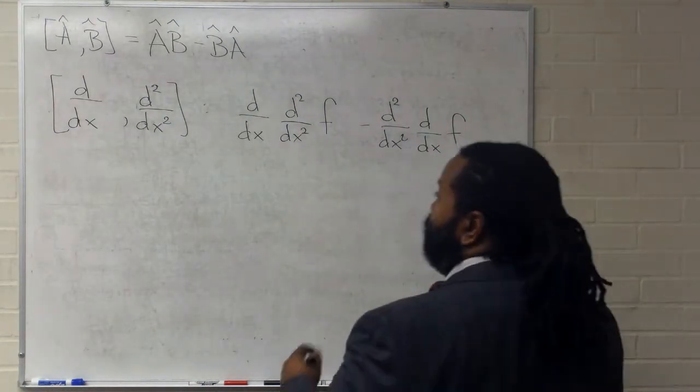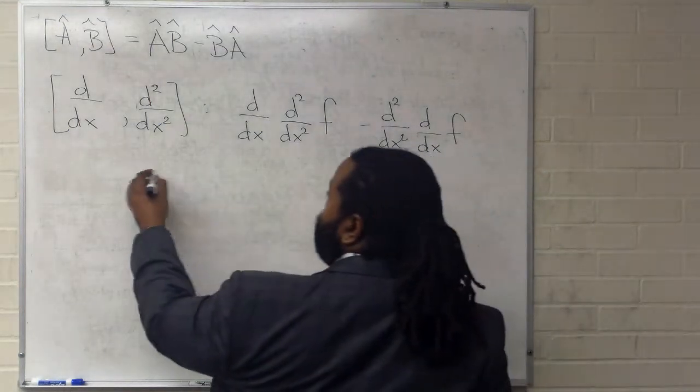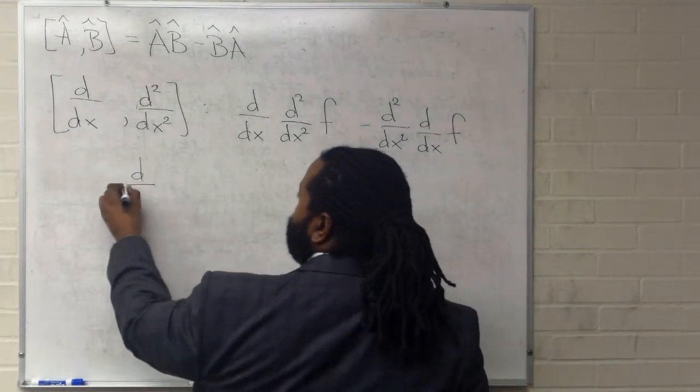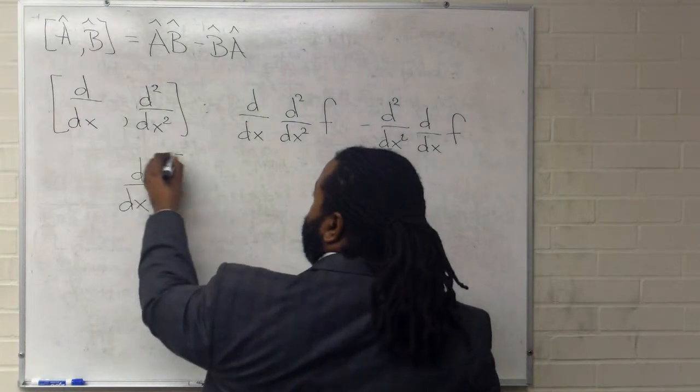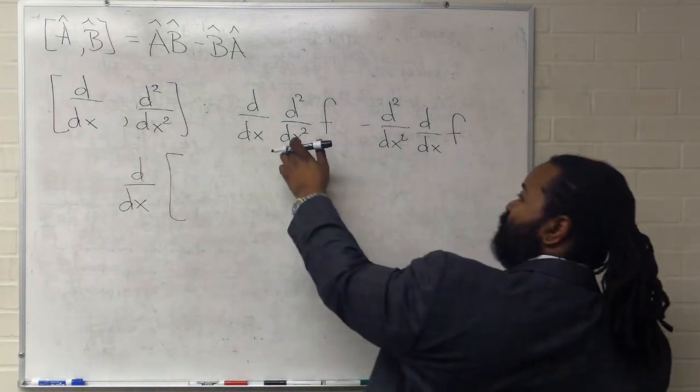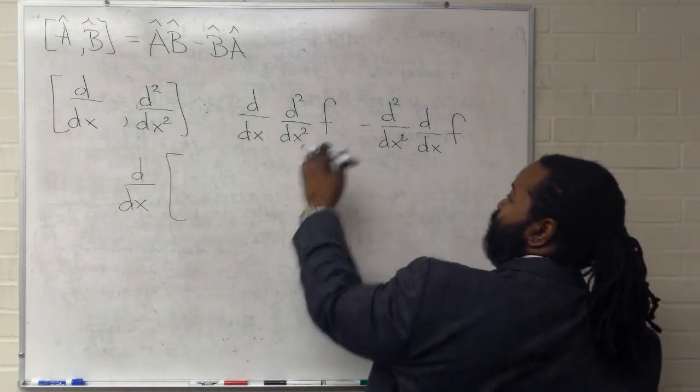The next step is to start simplifying. So this first part will leave operator A out, and we need to show the result of operator B acting on the function.